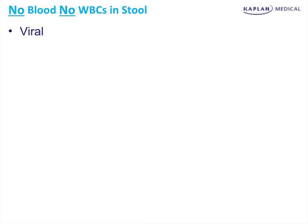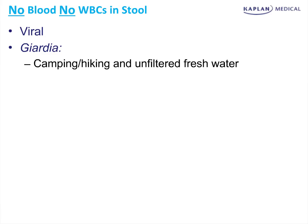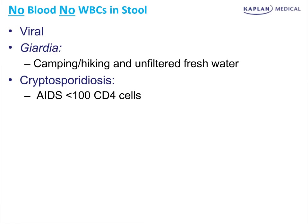How do we diagnose the etiology of diarrhea when there's no blood and no white cells in the stool? It could be viral, or it could be Giardia — look for a person camping or hiking with exposure to unfiltered fresh water. Cryptosporidiosis is almost exclusively in HIV, as a sign of opportunistic infection in advanced HIV. The test is a modified acid-fast stain — the most common wrong answer is expecting to see it on the ova and parasite exam, which you cannot.